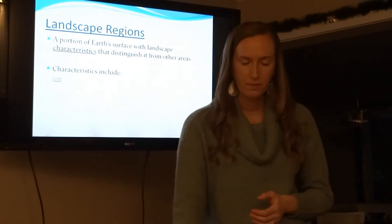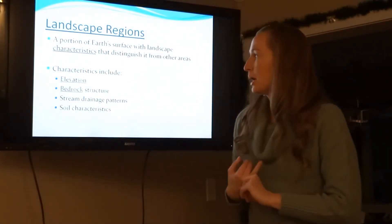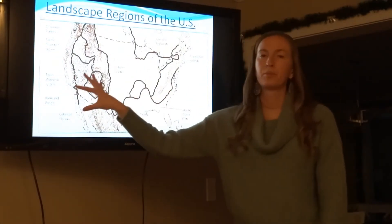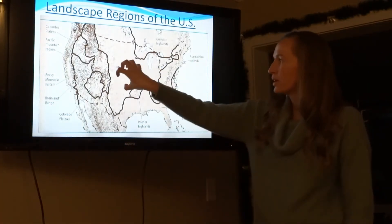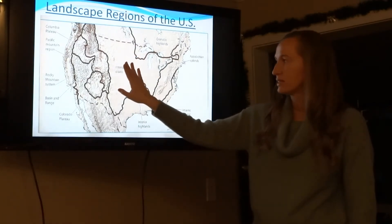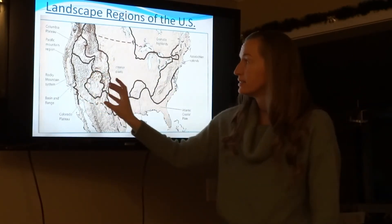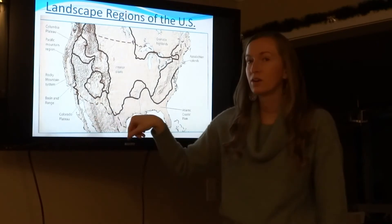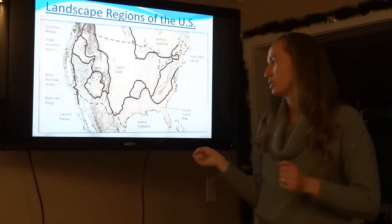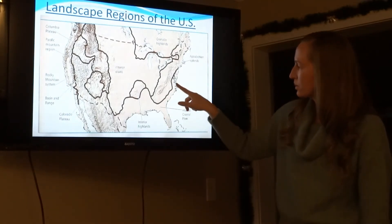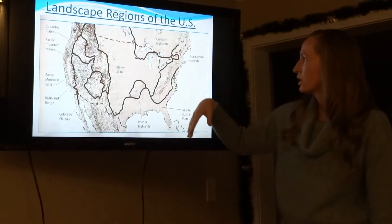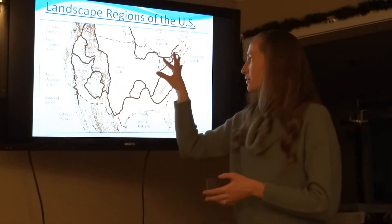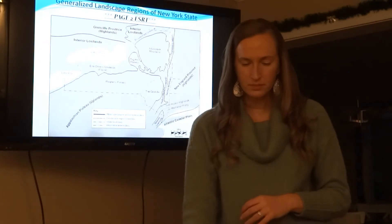Landscape regions are large areas with certain characteristics, including elevation, bedrock structure, stream drainage pattern, and soil characteristics. On this map of the United States, we can break the country into different landscape regions. The middle is the interior plains — flat and low-lying. The Rocky Mountains are a mountainous region. The Grand Canyon area is the Colorado Plateau. Near the coast are the coastal plains, and up here in New York we have the Appalachian Uplands with the Appalachian Mountains.